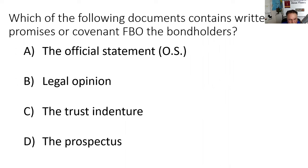Here's a potential test question: which of the following documents contains the written promises or covenants for the benefit of the bondholders? It's not the official statement. When the Securities Act of 1933 was passed requiring a prospectus for new securities, the U.S. government said they didn't need to comply, and municipalities said the same.